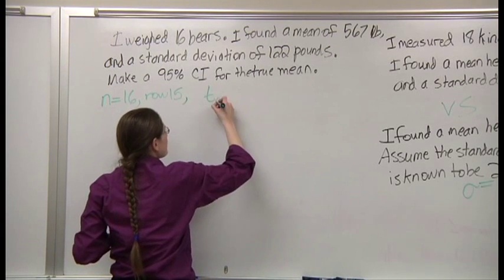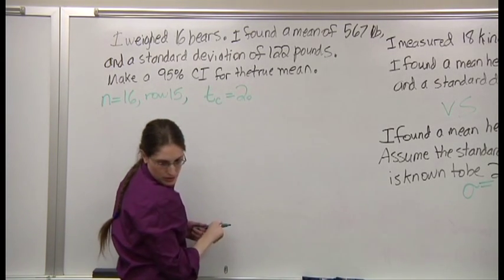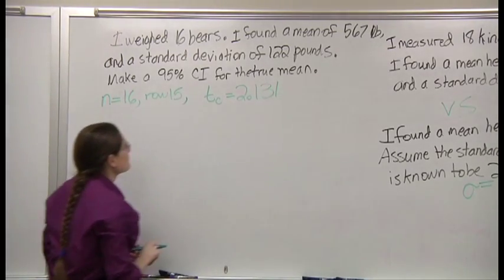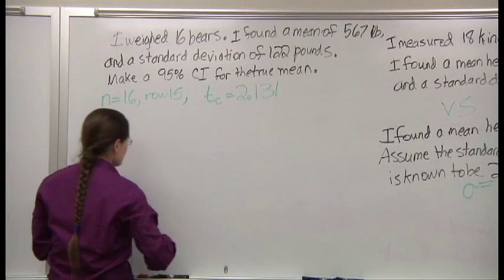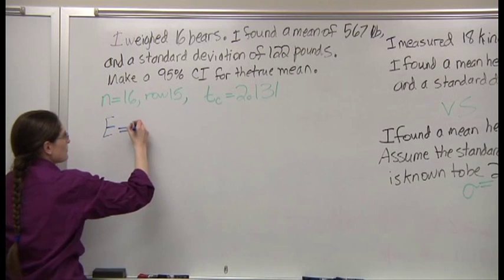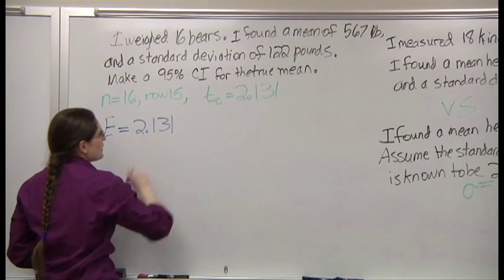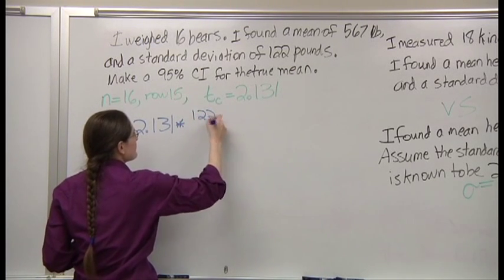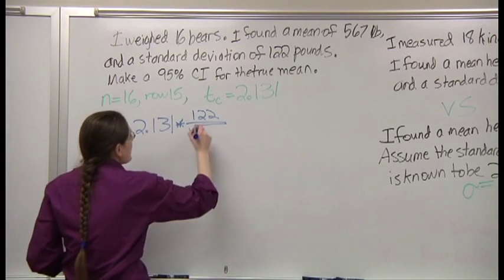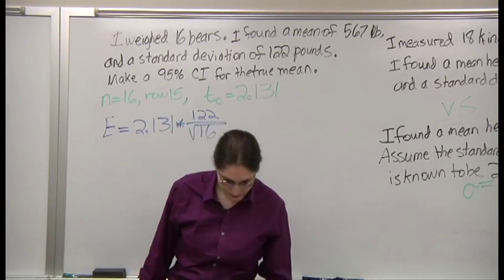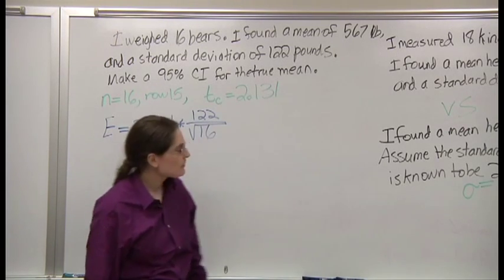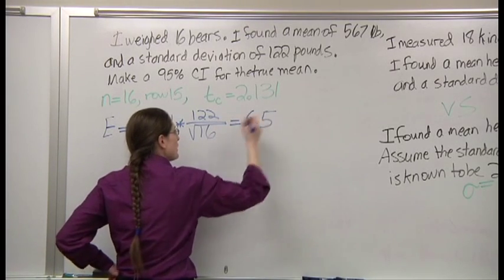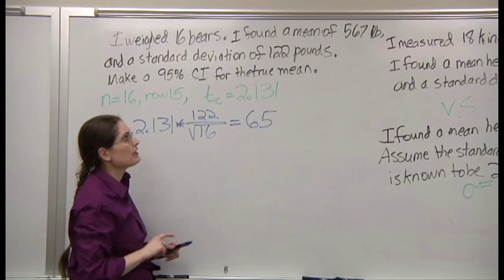Your T is 2.131. T times standard deviation, divided by the square root of 16. We work that out. It's about 65. 65 what? Pounds.